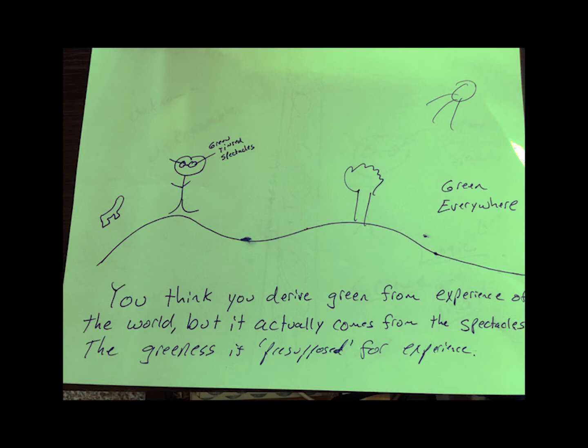So you perceive everything as green and you are not capable of perceiving anything as not green because your brain colors all as green. Notice too that you think the greenness must be out there in the world because you learn all things must be green from your experience of the world.